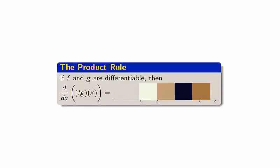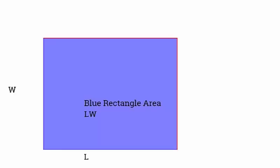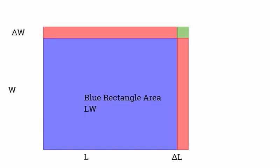Let's begin with the derivative of products and look at a fundamental application of products: area. Suppose we have a rectangle of width w and length l. The area of the rectangle is the product w times l. How does the area of the rectangle change when the width and the length are changed?